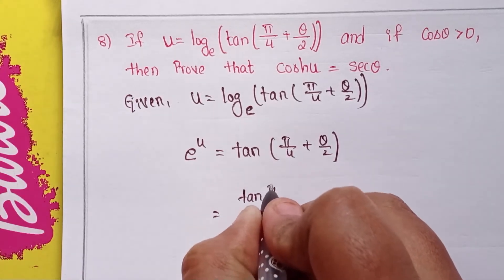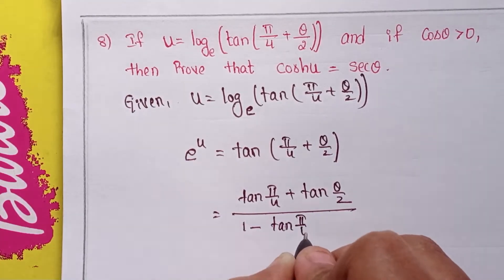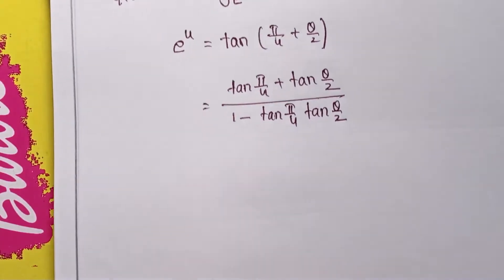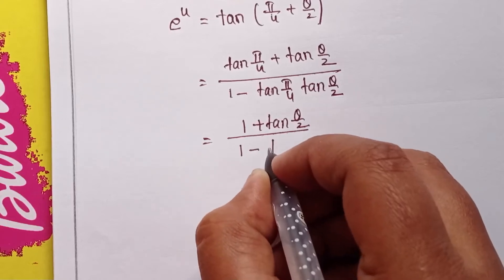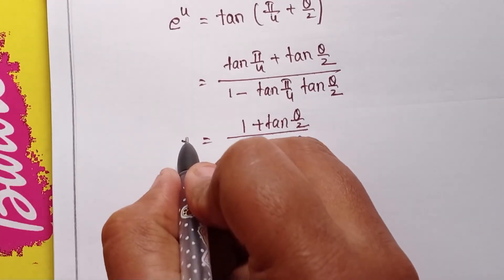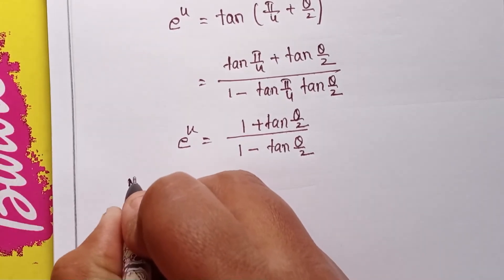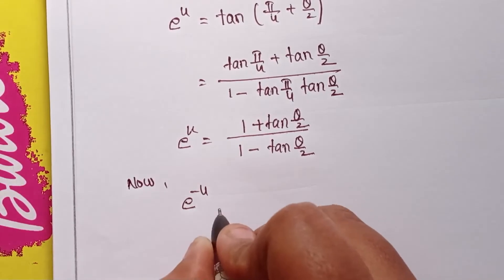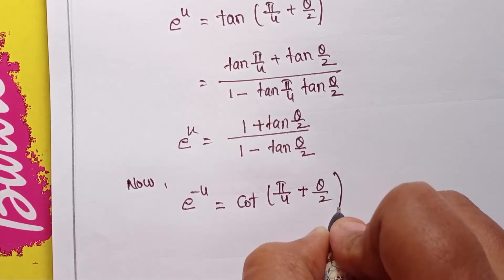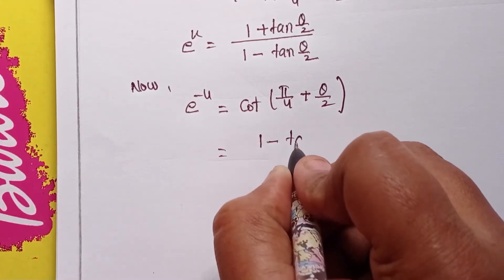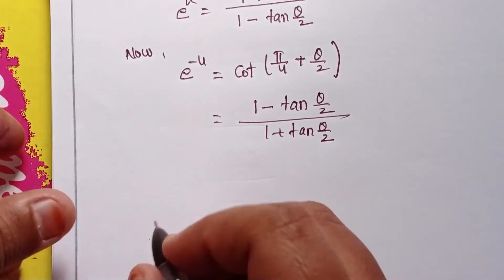tan(A + B) = (tan A + tan B) / (1 − tan A · tan B). So e to the power of u equals (1 + tan(θ/2)) / (1 − tan(θ/2)). Now, e to the power of minus u means the reciprocal, which gives cot(π/4 + θ/2), and directly writing the formula: (1 − tan(θ/2)) / (1 + tan(θ/2)).